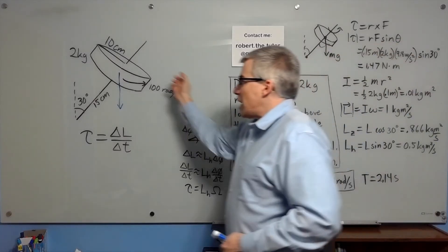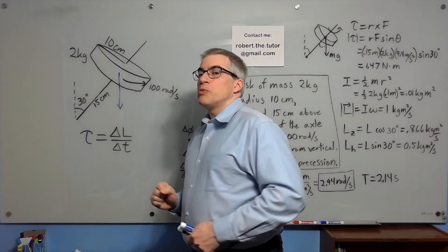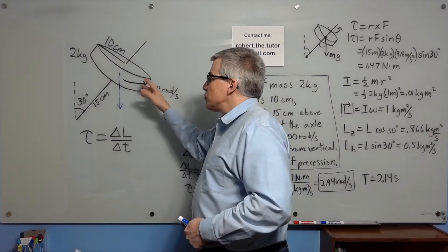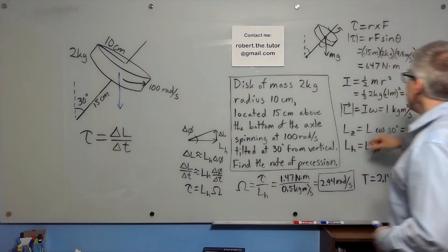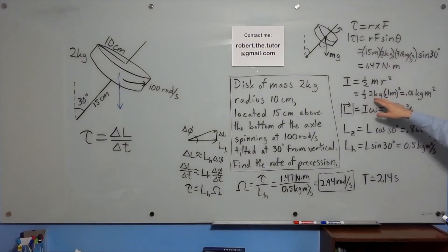We need to know how hard it is to get this thing turning. We need the moment of inertia. The moment of inertia for a disk is one half MR squared. So one half of 2 kilograms, 0.1 meters squared, is 0.01 kilogram meters squared.